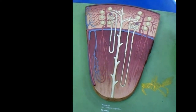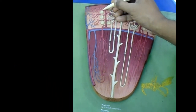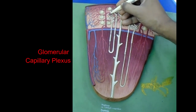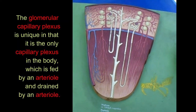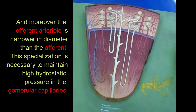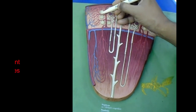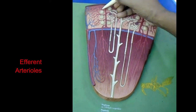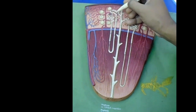Each interlobular artery gives off a number of afferent arterioles, which feed the glomerular capillary plexus. The glomerular capillary plexus is unique in that it is the only capillary plexus in the body which is fed by an arteriole and drained by an arteriole. Moreover, the efferent arteriole is narrower in diameter than the afferent. This specialization is necessary to maintain high hydrostatic pressure in the glomerular capillaries. The efferent arterioles from the glomeruli are unique as they begin in capillaries and end in capillaries.